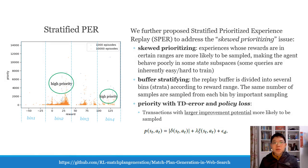We further propose Stratified Prioritized experience Replay (SPR) to address the skewed prioritizing issue. Experiences whose rewards fall in certain ranges are more likely to be sampled, making the agent behave poorly in some state subspaces. We want all queries to receive sufficient training. The first innovation is buffer stratification: the replay buffer is divided into several bins, or strata, according to reward ranges, and the same number of samples are drawn from each bin via importance sampling. The second idea is priority with TD error and policy loss, so that transitions with large improvement potential are more likely to be sampled.